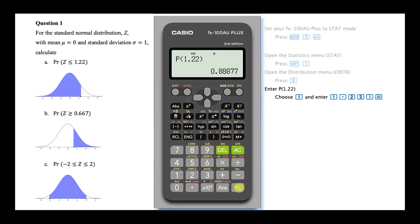Our answer is 0.88877. To perform our second calculation, reopen the statistics distribution menu by pressing shift and then 1 and then 5.